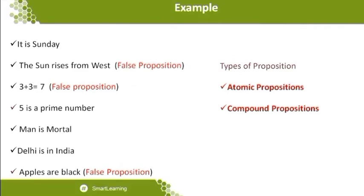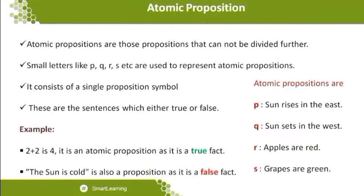There are two types of propositional statements: atomic propositions and compound propositions. Atomic propositions are direct statements that cannot be divided further — we cannot expand them further. The conclusion is made directly from the given line. They consist of a single proposition symbol. A symbol is a representation: statement one may be taken as x, statement two as y, statement three as z, making it easier for the system to recognize.